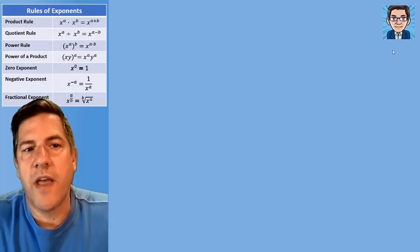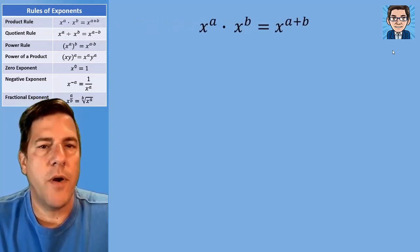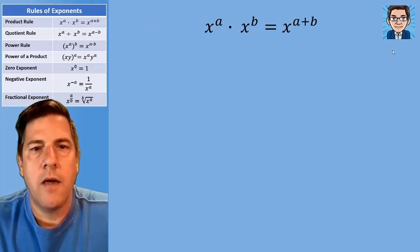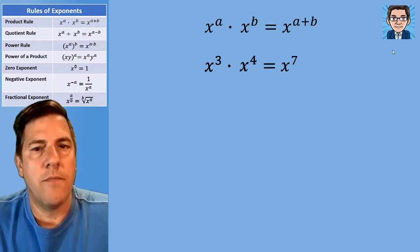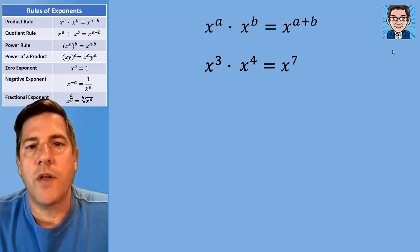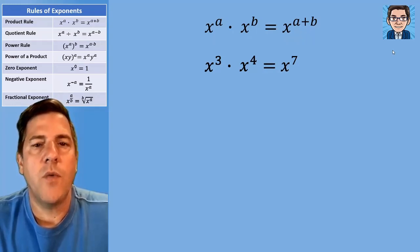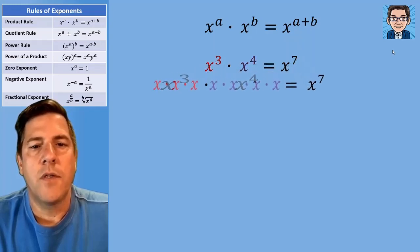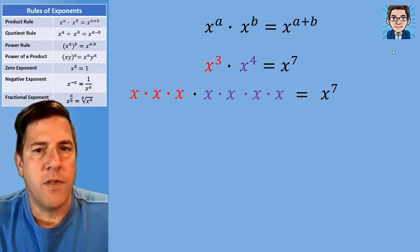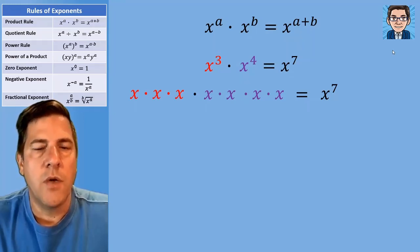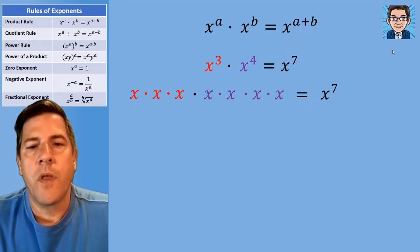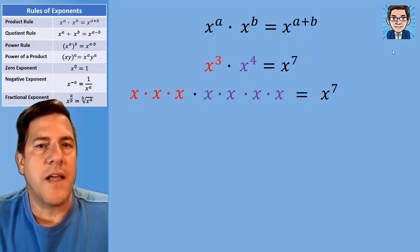Let's take a look at the rules of exponents. Our first rule is when we multiply two variables that have exponents, we're going to add the exponents. So something like x to the third times x to the fourth equals x to the seventh. Let's see why that works. If we have x to the third, that's multiplying x three times. x to the fourth is multiplying x four times. So we're just adding the number of times that we're multiplying together — third and fourth gives us seventh. We're multiplying seven times.